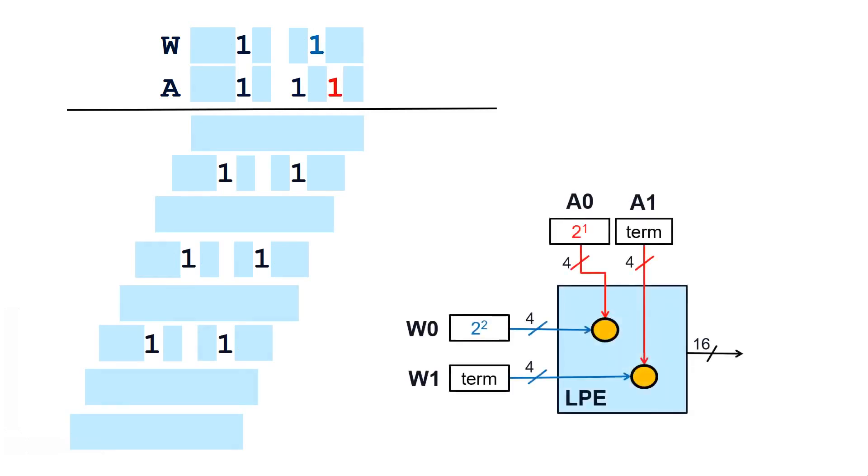Every cycle for each pair of activation and weight, Leconic's PE processes a single term. In this example, the first term of A0 is 2 to the power of 1 and for W0 is 2 to the power of 2.